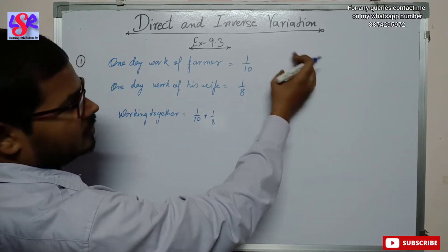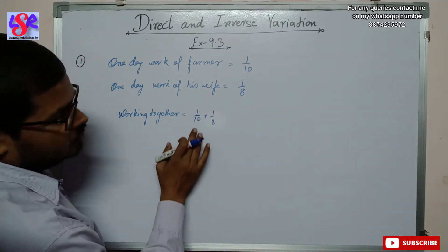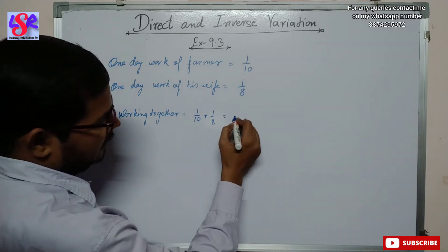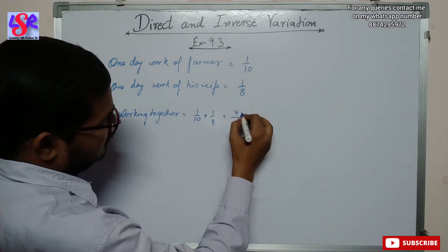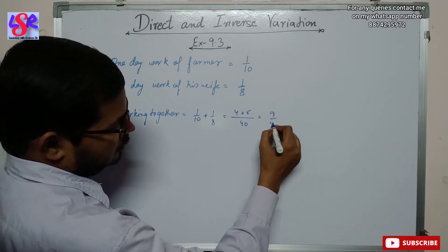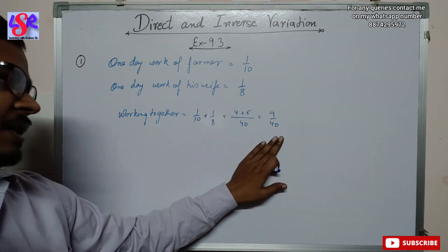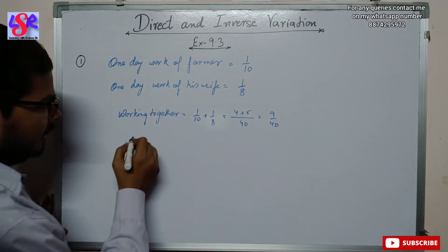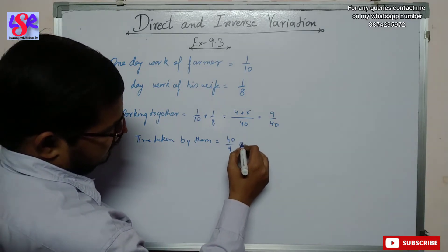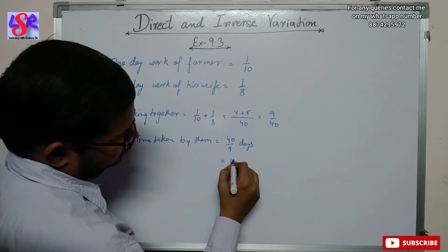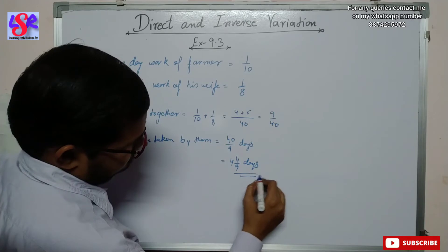The farmer completed one upon ten part of the work and the wife completed one upon eight part of the work. Since both worked together, we add these. The LCM of ten and eight is forty, giving us four times and five times, which equals nine upon forty. This is the part of work done together in a single day. The time taken by them equals the reciprocal, which is forty upon nine days, that is four and four-ninths days.